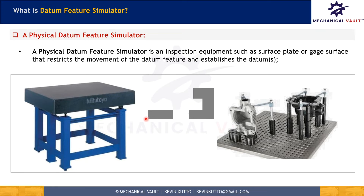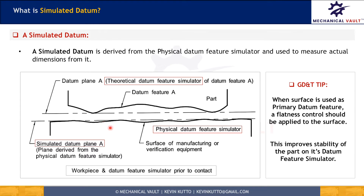For example, with this part, the bottom face is the datum feature and we use a planar surface to establish primary datum A. As studied earlier, this face on the engineering drawing is theoretical, meaning datum plane A is theoretical and we cannot measure dimensions from it directly. So we keep the part on a surface plate, and that surface plate acts as the physical datum feature simulator to simulate datum plane A.